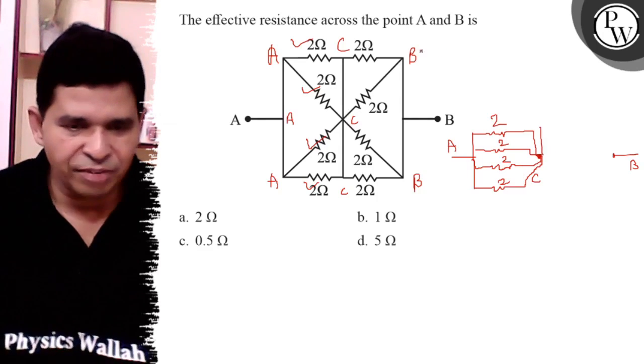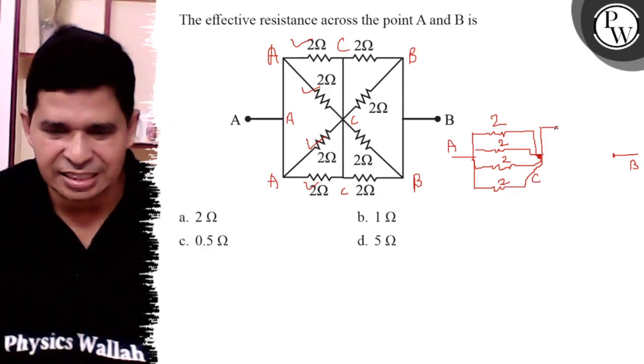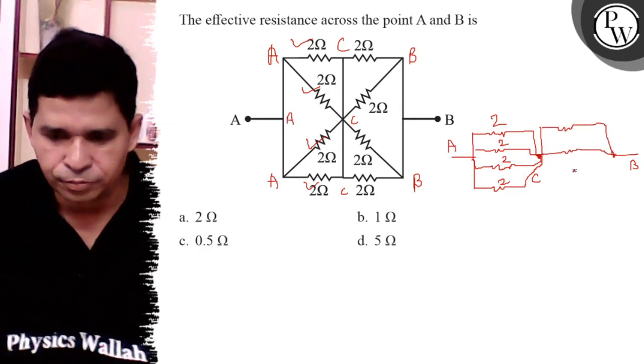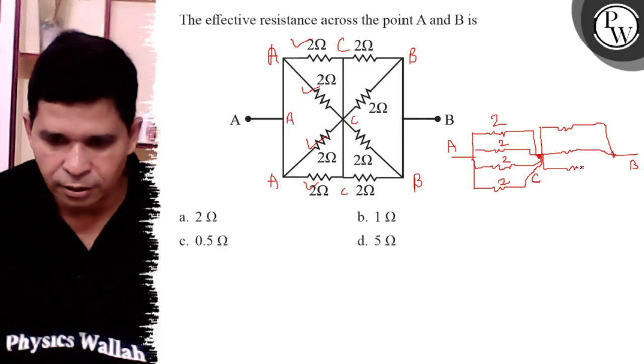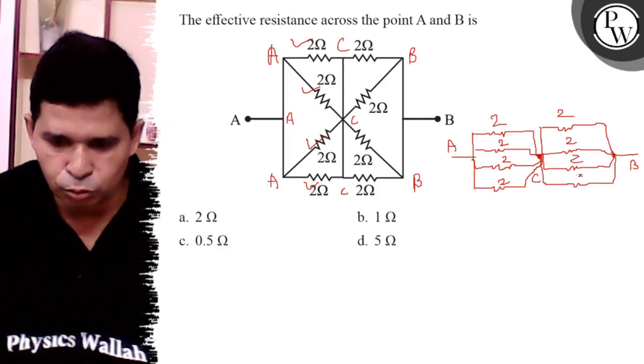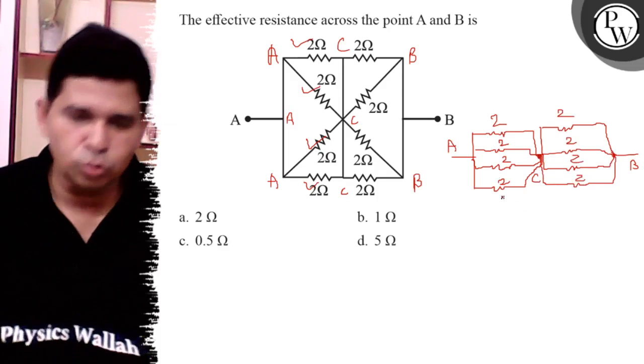Similarly, in between B and C, four resistances are connected, each having the value 2 ohm. So it is 2, 2, 2, 2. So definitely 2, 2, 2, 2 are in parallel.